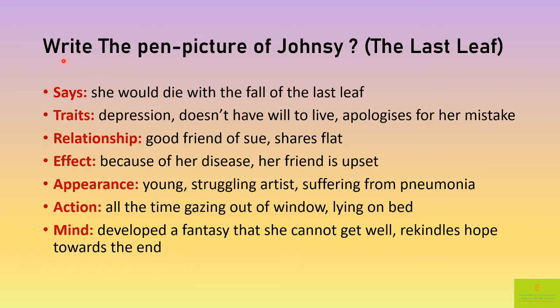E — effect — because of her disease and depression, her friend Sue is upset and worried. A — appearance — we are not told much; we only know that John C. is young, a struggling artist, and she is suffering from pneumonia. A — action — all the time John C. is gazing out of the window while lying on the bed, looking at the ivy leaves that are falling down. M — mind — she has developed a fantasy that she cannot get well, and with the fall of the last leaf she will also die. But then she rekindles hope towards the end of the storm.